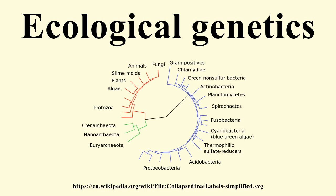Although work on natural populations had been done previously, it is acknowledged that the field was founded by the English biologist E.B. Ford in the early 20th century. Ford was taught genetics at Oxford University by Julian Huxley, and started research on the genetics of natural populations in 1924.